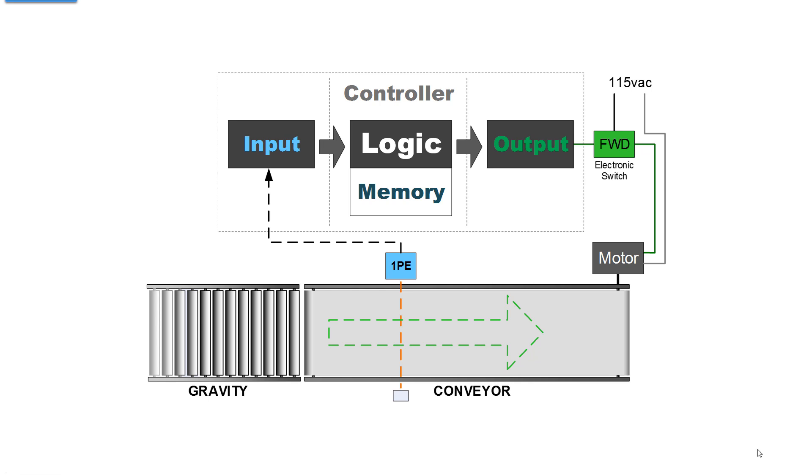The photoelectric switch is placed where you want the object to stop in that position. When the object interrupts the optical path of the sensor, the controller knows that the object has arrived.